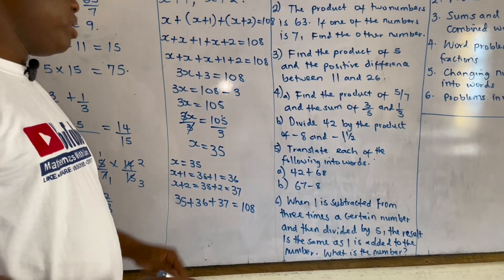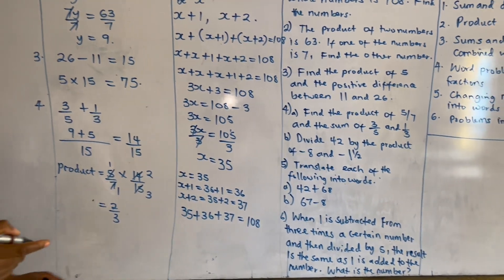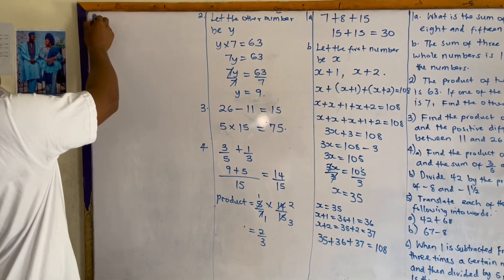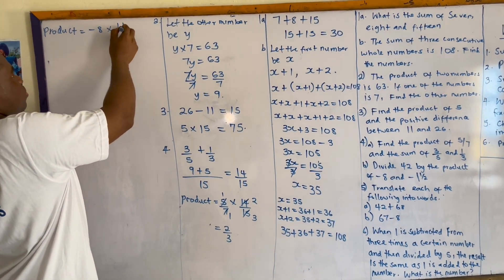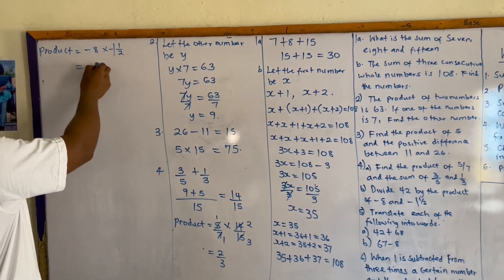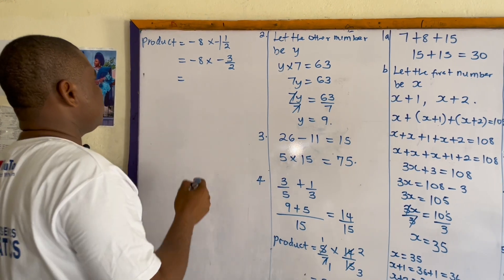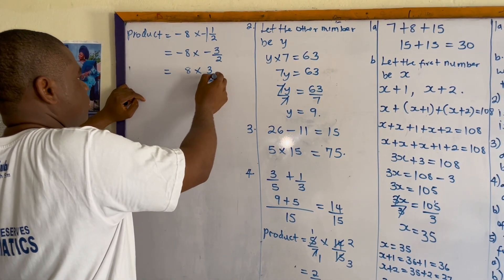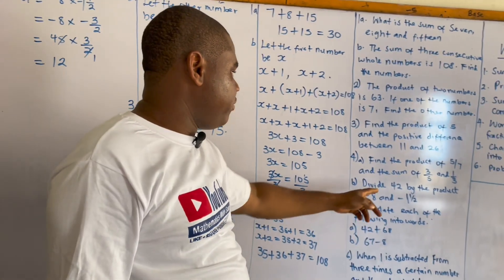The next part says: divide forty-two by the product of negative eight and negative one and one-half. First calculate the product of negative eight and negative one-and-a-half. Converting the mixed number: negative one-and-a-half becomes negative three-halves. Negative eight times negative three-halves — since minus times minus gives plus — equals eight times three-halves. Simplifying: two goes into two once and into eight four times, so four times three equals twelve.